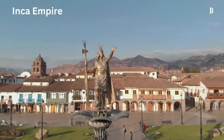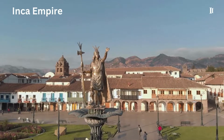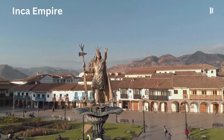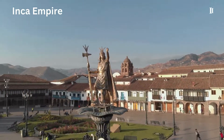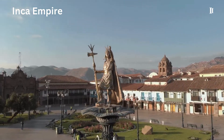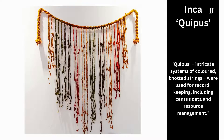Another fascinating example comes from the Inca Empire, where quipus — intricate systems of colored, knotted strings — were used for record-keeping, including census data and resource management.